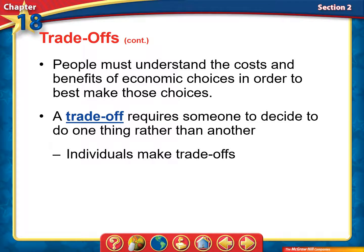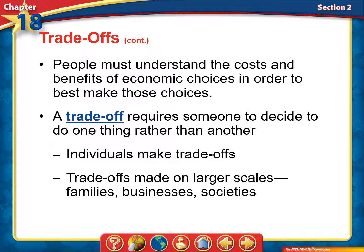Every individual decision we make has some degree of trade-off. When I bought my phone, I knew it would be my phone for about four years — it wasn't a short-term purchase, so I'm keeping it until it doesn't work anymore. That means whatever other phone I could have gotten won't be happening, and that's a trade-off. Even businesses make trade-offs — when Google chose to purchase YouTube, that was a huge financial decision they had to carefully weigh the cost of.